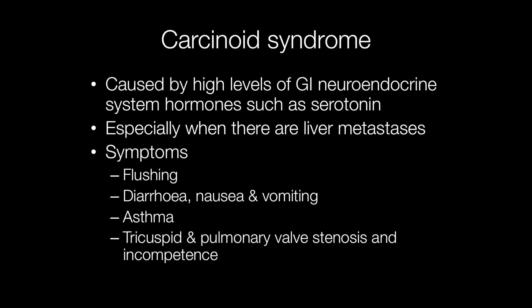Carcinoid syndrome is caused when there are high levels of gastrointestinal neuroendocrine system hormones such as serotonin in the circulation, especially when there are liver metastases. Symptoms include flushing, diarrhoea, nausea and vomiting, asthma, and heart problems including tricuspid and pulmonary valve stenosis and incompetence due to thickening of the valves, which may present with breathlessness, oedema, and ascites.